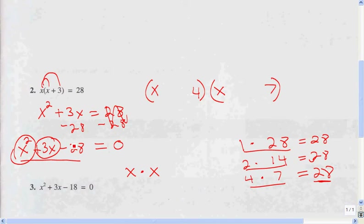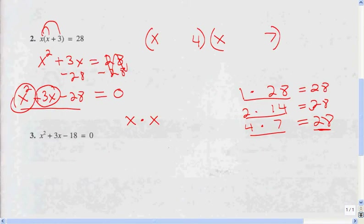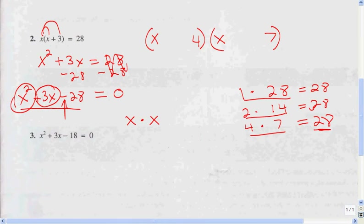I look at my third term — it's negative. So I know my signs have to be different, because that's the only way I'm going to get a negative third term. We know that 4 and 7 are going to be our factors. Since the third term is negative, the signs will be different. And since the middle term is positive, the largest number is going to be positive. Since the largest number is 7, that's going to be positive, which will give us a positive middle term and a negative third term.